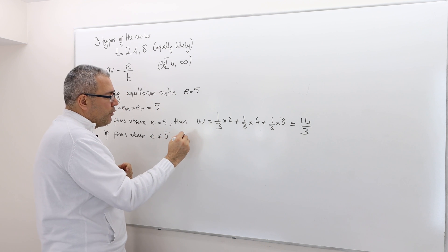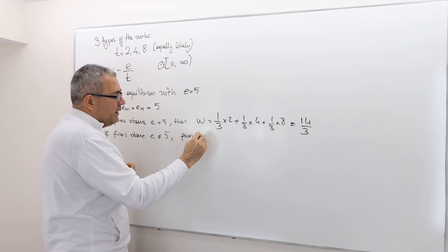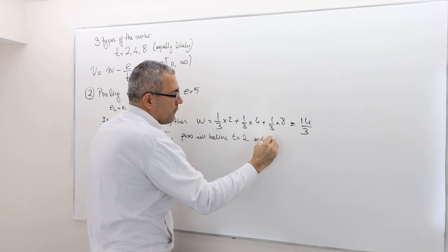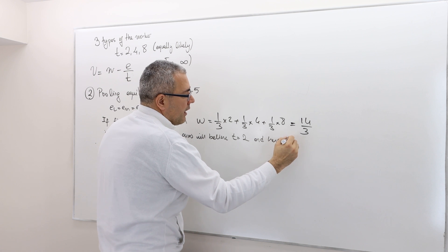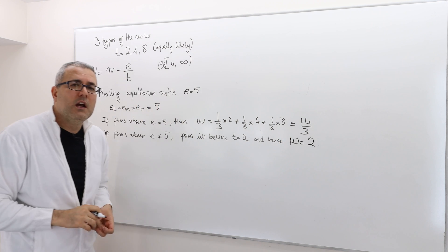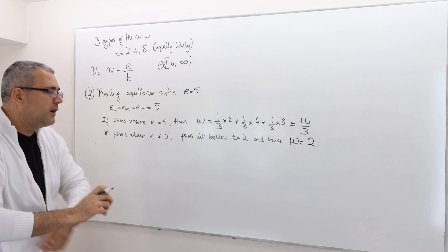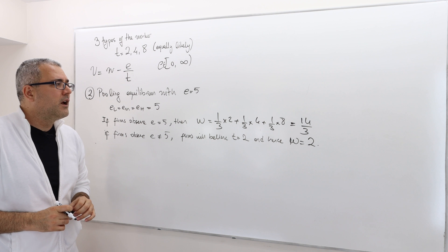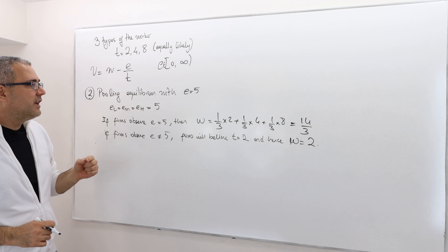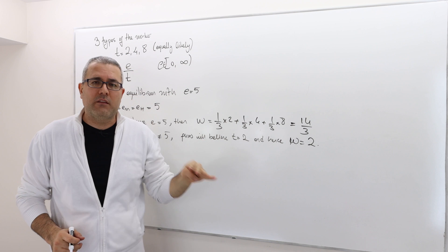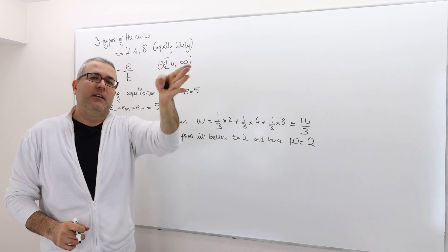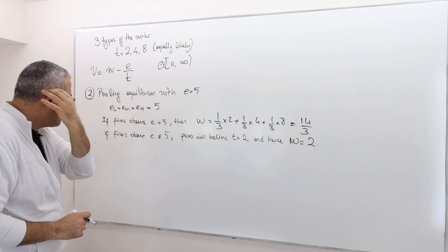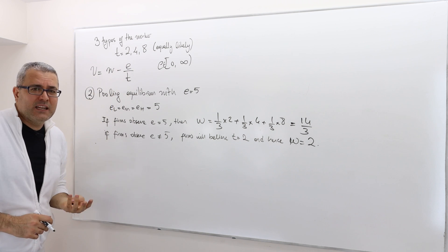Let's stick to the simplest possible scenario. In this case, firms will believe T equals 2, and hence W is going to be equal to 2. So if the firms observe an education level other than 5, they're going to offer 2. Therefore, the wage can be 14 divided by 3 only at education level 5; everywhere else it's going to be 2. So the question is: do they have incentive to deviate?